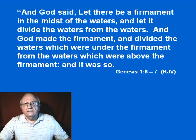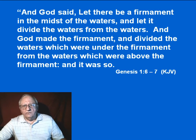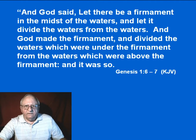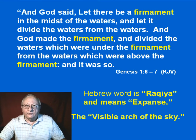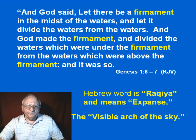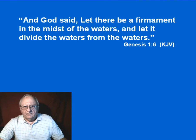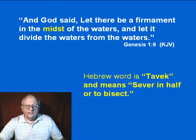As we ended the last session, we were talking about verses 6 and 7 of Genesis chapter 1, where God said, 'Let there be a firmament in the midst of the waters.' We discussed the meaning of the Hebrew word rakia, which means expanse, or the space necessary to put everything that God created into. Strong's view was that it meant the visible arch of the sky. After discussing the firmament in verse 6, where it is said to have been placed in the midst of the waters, we discussed the meaning of the word tavek, which is translated 'midst' in verse 6, meaning to sever in half, or to bisect.